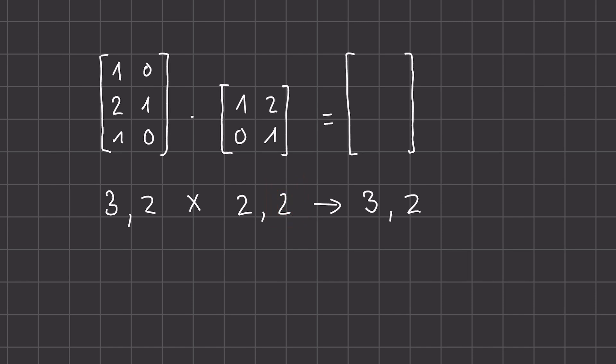Now the result for the first row, first column, will be the multiplication of the first row of the first matrix and the first column of the second matrix. So when we talk about multiplying one row with one column, what that means is we multiply the first entry with the first entry and the second entry with the second entry and we add them all up. So in this case, one times one plus zero times zero. So in this case, it would be one.